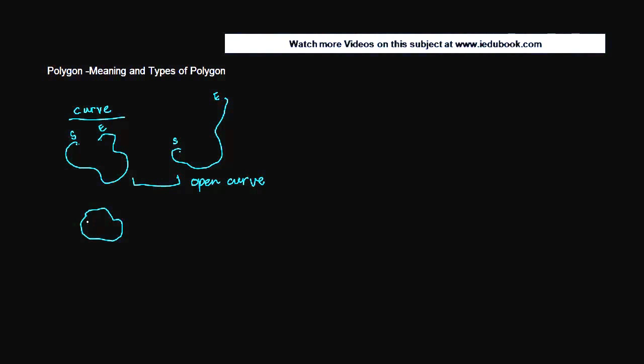Whereas if you notice in this particular case, we started from this point, let's call it as S. We went around and came back and finished also at the same point. So the starting and the end point are same. These kinds of curves are known as closed curve.